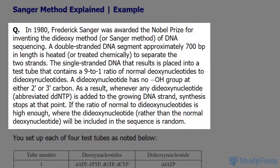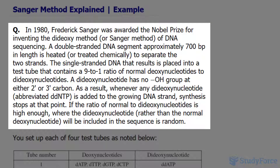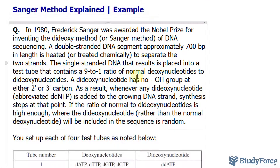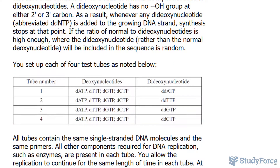A dideoxynu­cleotide has no OH group at either the 2 prime or 3 prime carbon. As a result, whenever any dideoxy is added to the growing DNA strand, synthesis stops at that point. So in this experiment, you set up each of the four test tubes as noted below.